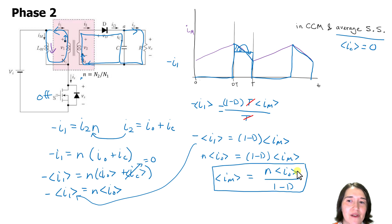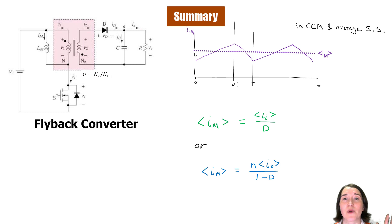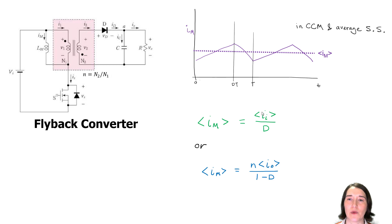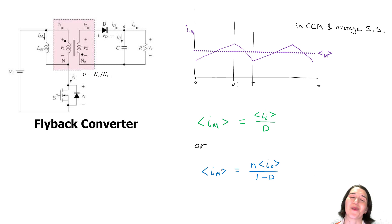To summarize: if you want the average magnetizing inductance current in CCM, you can approach it from the input side — divide the average input current by D — or from the output side — multiply the output current by n and divide by (1−D). Knowing the turns ratio and duty ratio, you can find the average magnetizing current and use it for calculations such as finding the critical inductance value for the flyback converter.